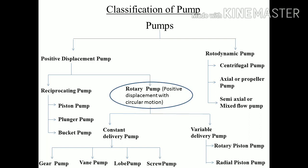I will discuss about the highlighted portion of this classification, that is the rotary pump. The rotary pump has a rotary motion and it is a positive displacement pump. This is of two types: constant delivery pump and variable delivery pump. I will discuss today about the constant delivery pump. Under constant delivery pump, the gear pump, vane pump, lobe pump, and screw pump are present.